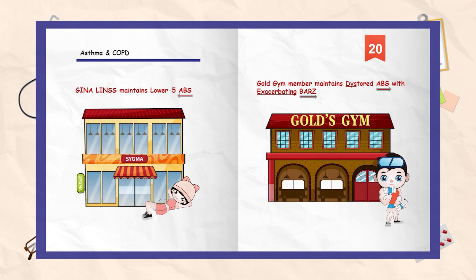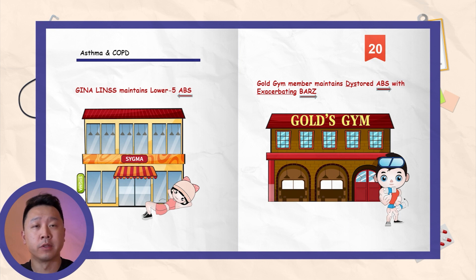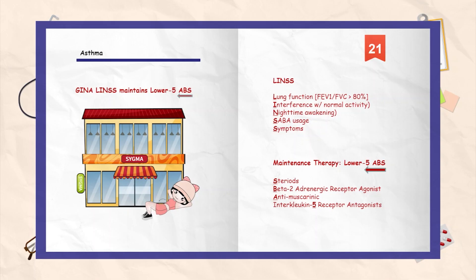For the asthma component, the acronym is 'Gina Linz maintains lower 5 ABS.' Notice the arrow is going from right to left. Each letter represents a specific class of medication. GINA stands for Global Initiative for Asthma. She is working in the SIGMA GEM — SIGMA being a pivotal clinical trial that approved Budesonide plus Formoterol, otherwise known as Symbicort, for use as a rescue inhaler, because Formoterol has a 5-minute onset of action.